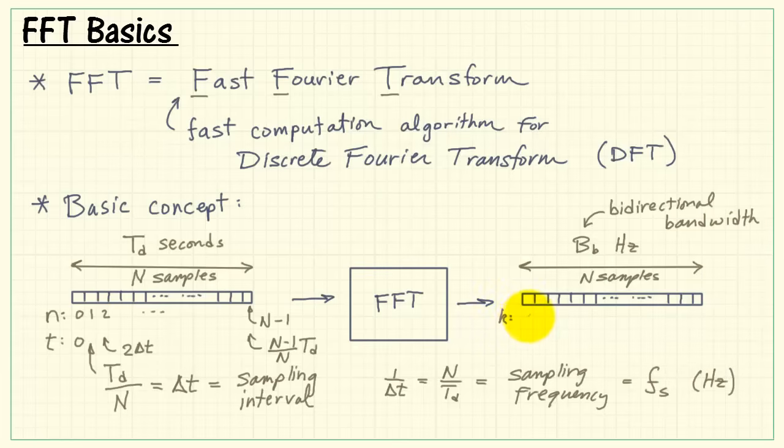The frequency index is k. This is also known as the bin number. It runs from 0, 1, 2, 3, and so forth, up to n minus 1.